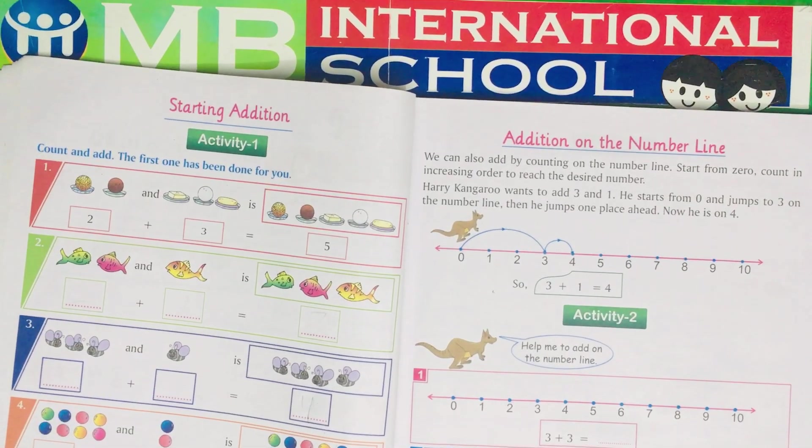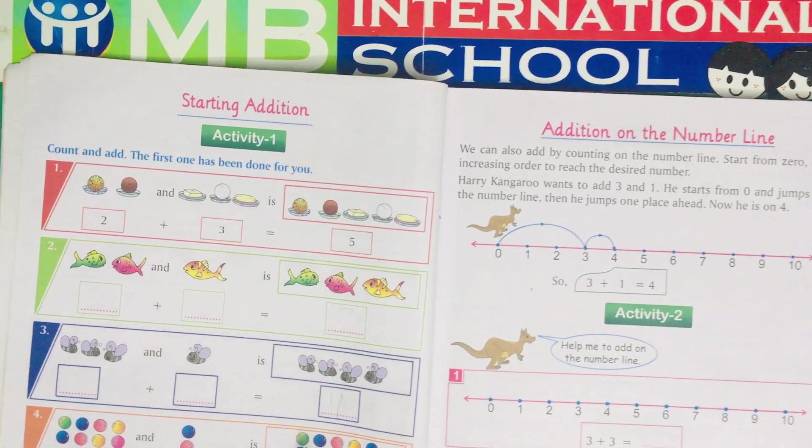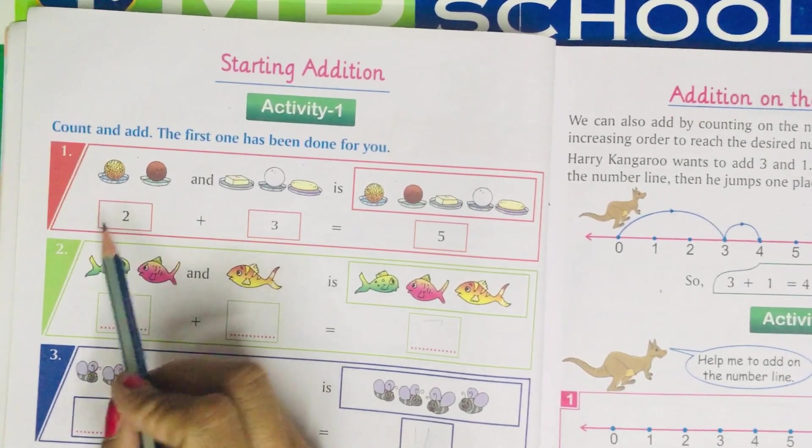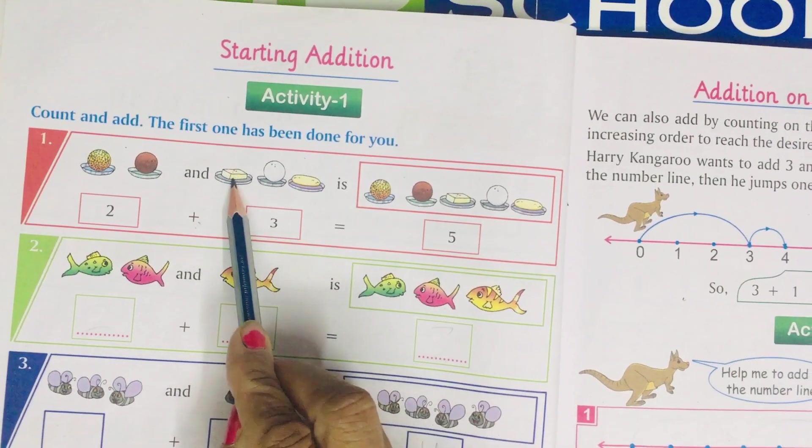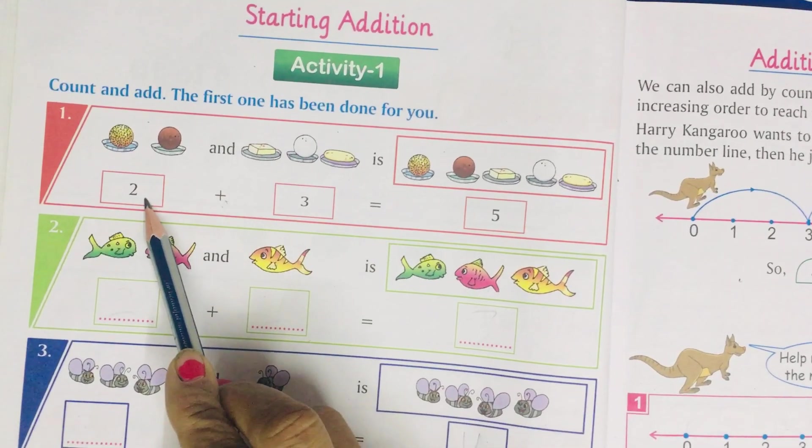Today we will do addition sums. Count and add. See, 1 is done for you. Count 1, 2 plus 1, 2, 3. 2 is written over here and 3 is.